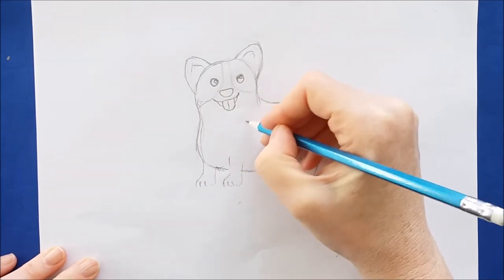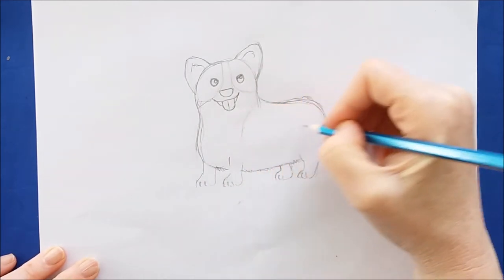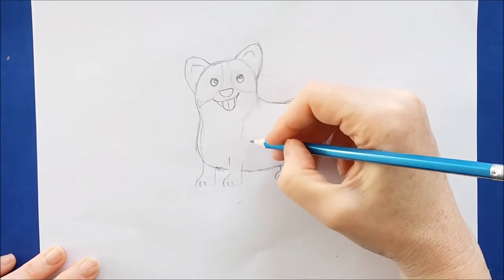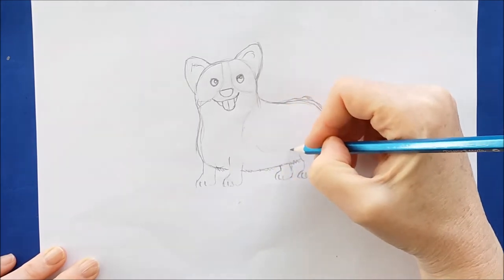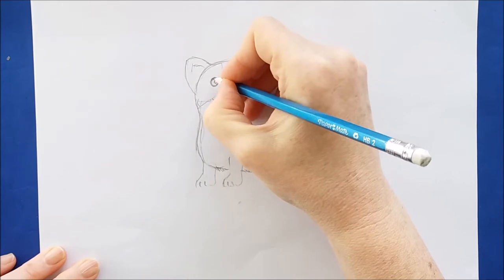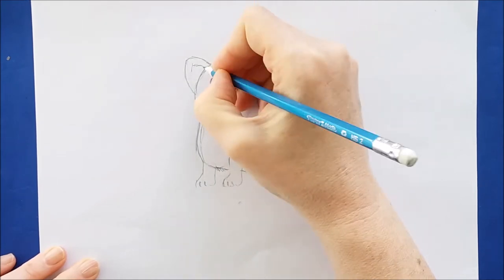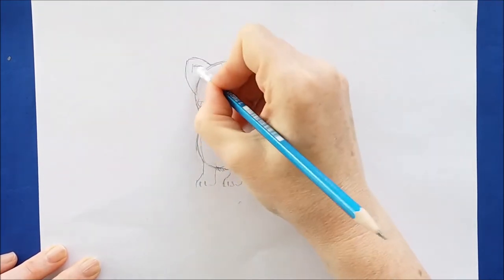I'm going to draw a thin line at the chest of the corgi and then a little rounded line across the back of the corgi. And this will be where we color him in brown. And I'm putting these lines here so I know where to color when I get ready to do that.